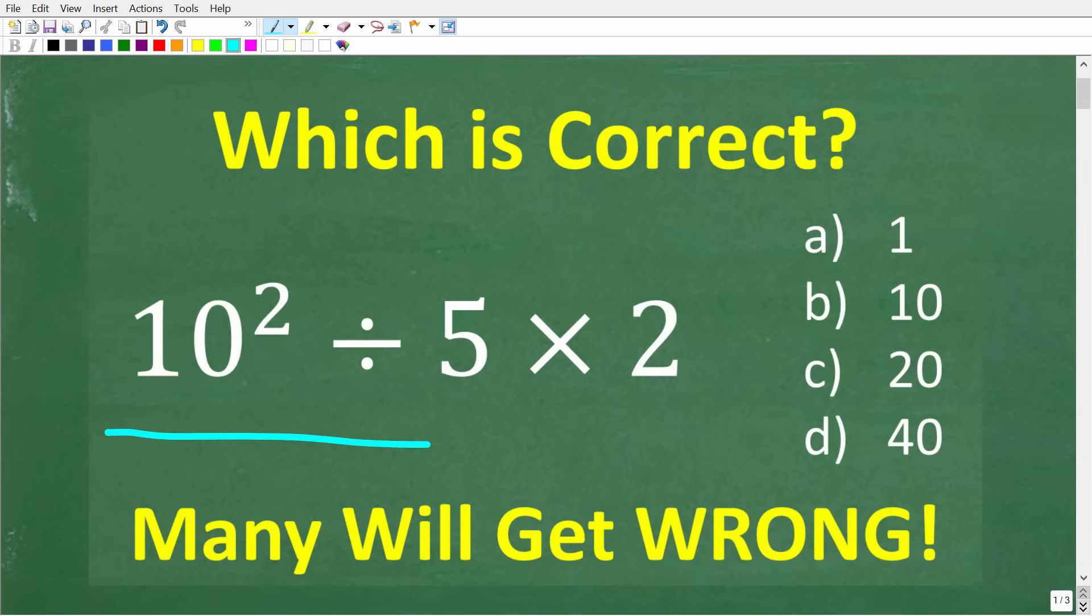So let's take a look at the question. We have 10 squared divided by 5 times 2. Now, we do have a multiple choice question here. So a is 1, b is 10, c is 20, and d is 40.